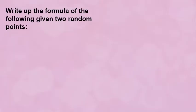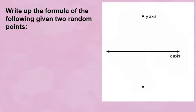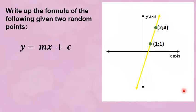Now let's look at writing up the formula when two random given points are provided. I give you a Cartesian plane with no grid, and just two random points plotted on it with the graph drawn. The two points are (1, 1) and (2, 4). Again we're going to start with our cookie cutter mold: y is equal to mx plus c.